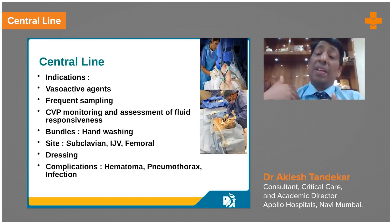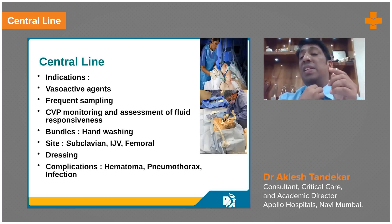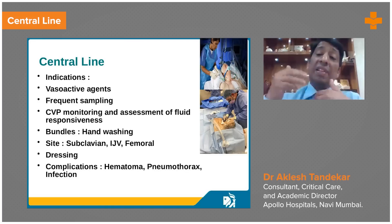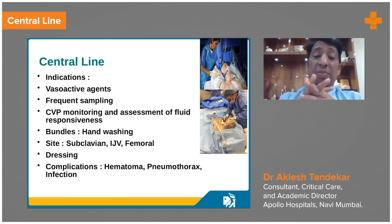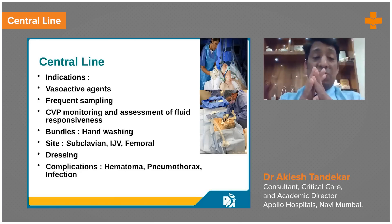Subclavian is more preferred, especially if the patient has a tracheostomy. Tracheostomy secretions will soil the internal jugular venous access and then the patient will have central line-related bloodstream infections. That's why subclavian line is preferred, but you need a lot of experience putting these lines.